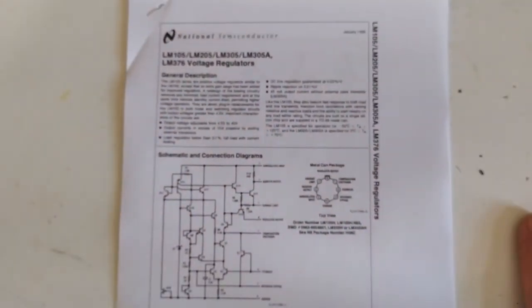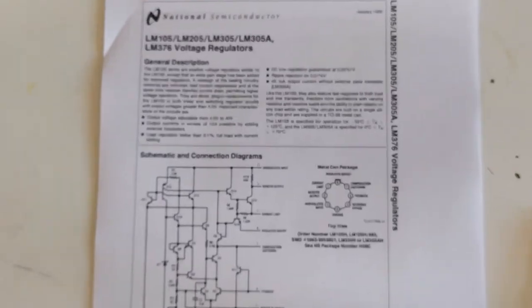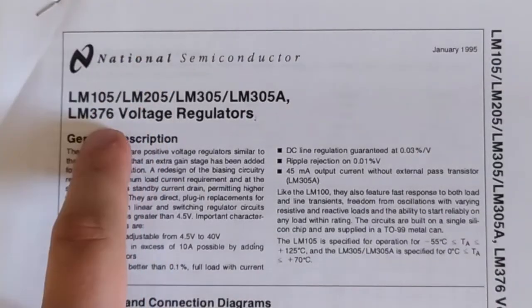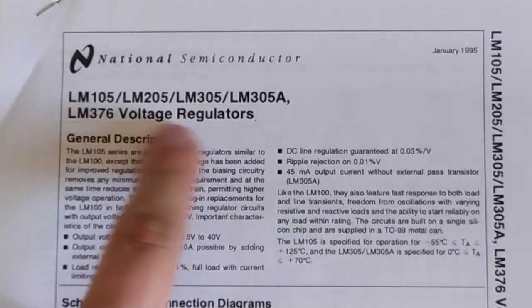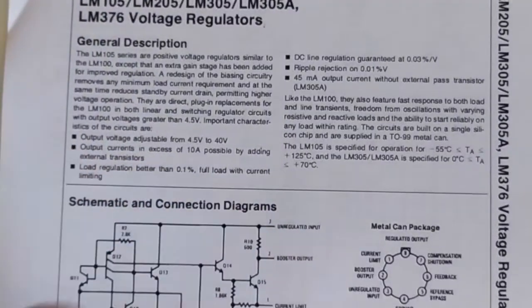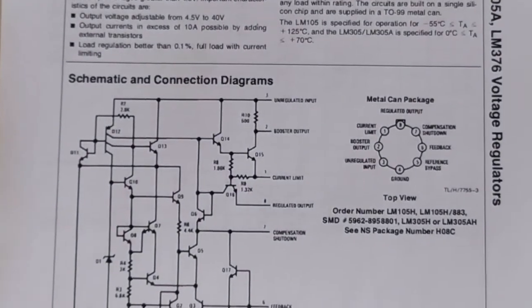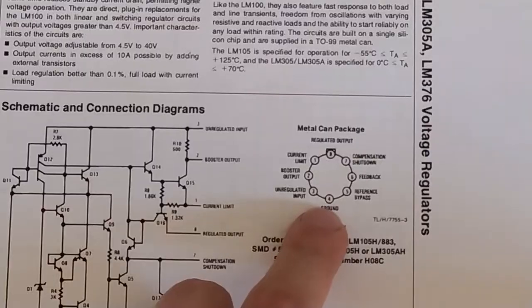So if we look at the datasheet for this, we can see this is the LM305 voltage regulator. These are positive voltage regulators that come in a metal can package.